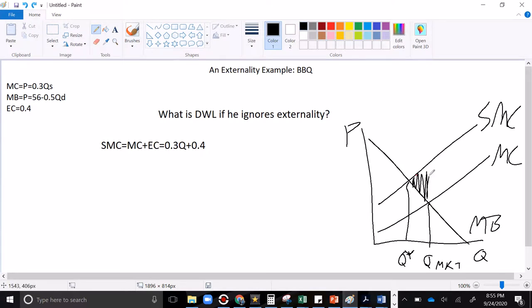The costs to society are literally greater than the benefits, and so that's a loss. All of this area is a loss, and so that's what we're trying to measure. We need to get the height of that triangle and the base of it. Well, the height is easy, right? We have a constant external cost of 0.4. That is how far apart the SMC and the MC curve are at every quantity, and so it's 40 cents high.